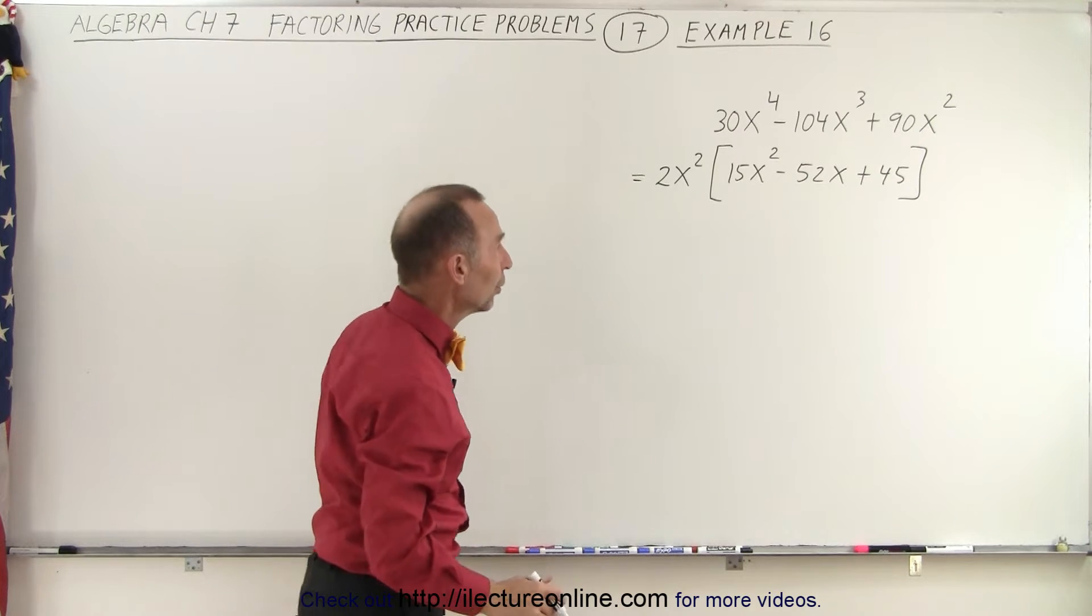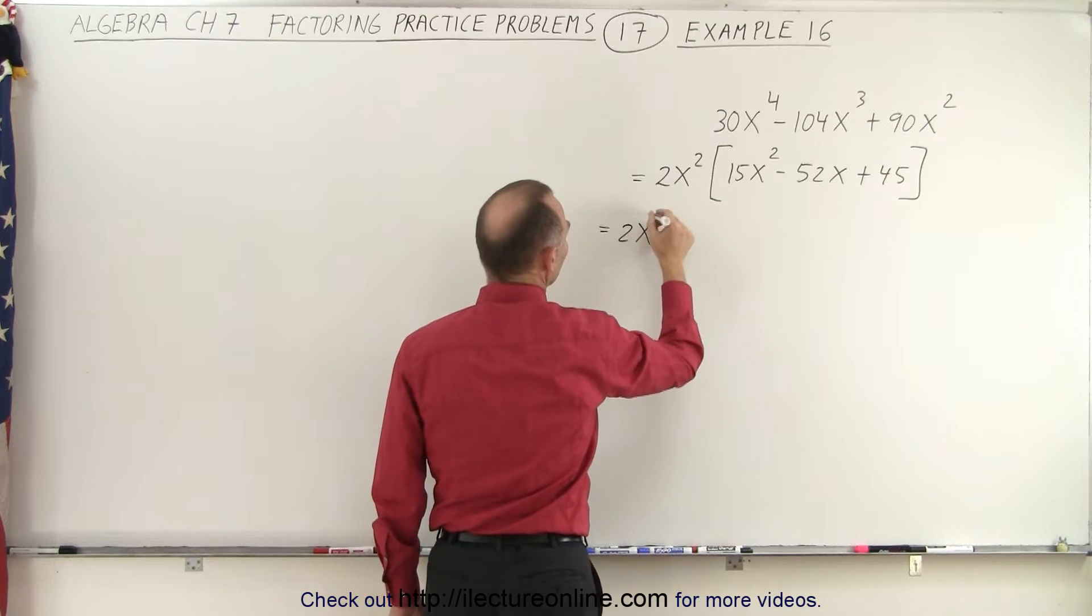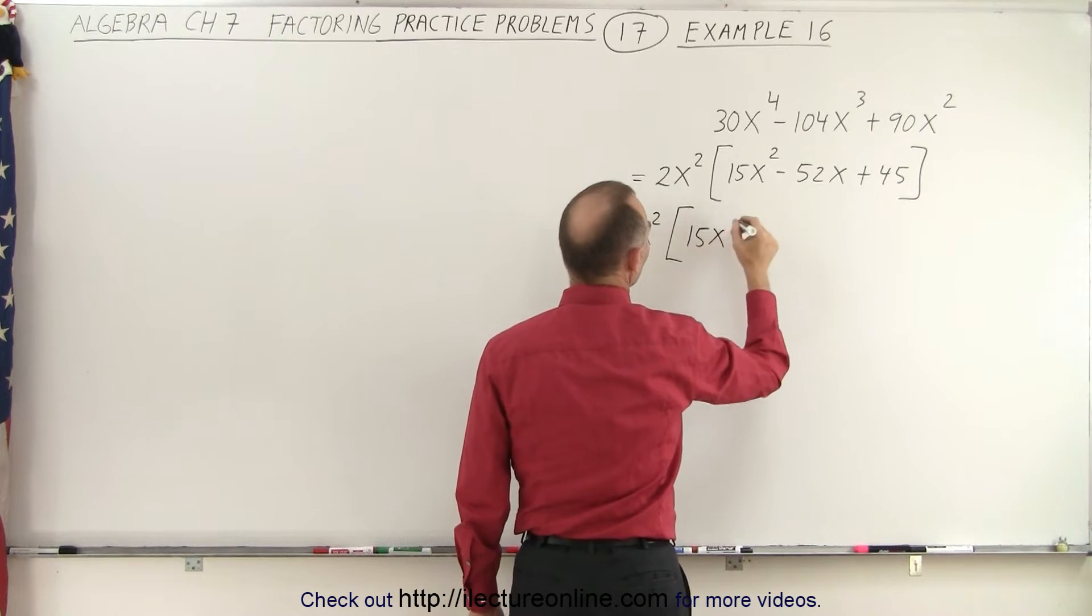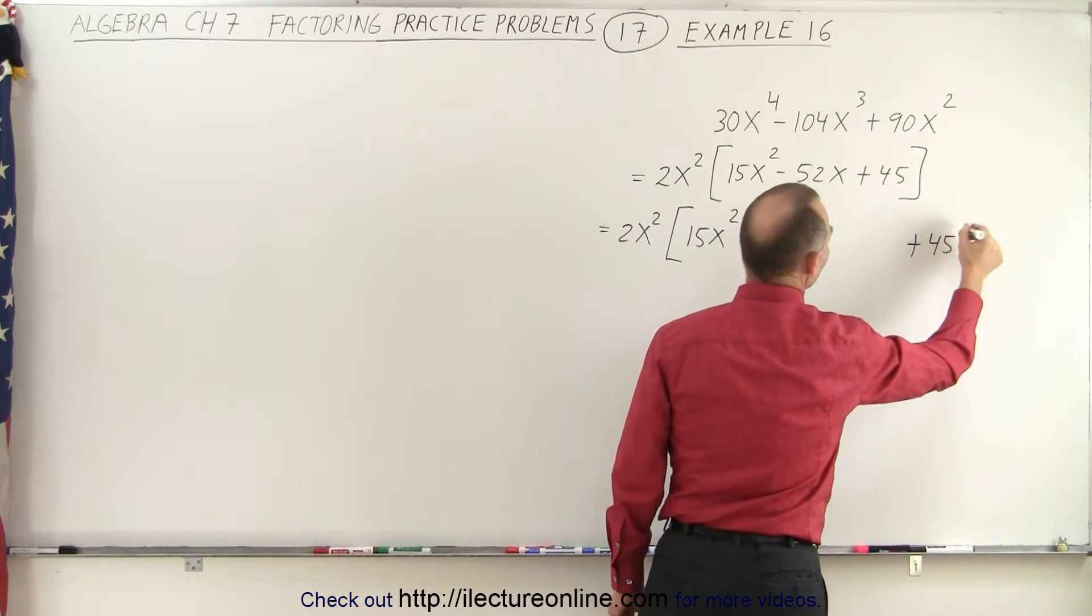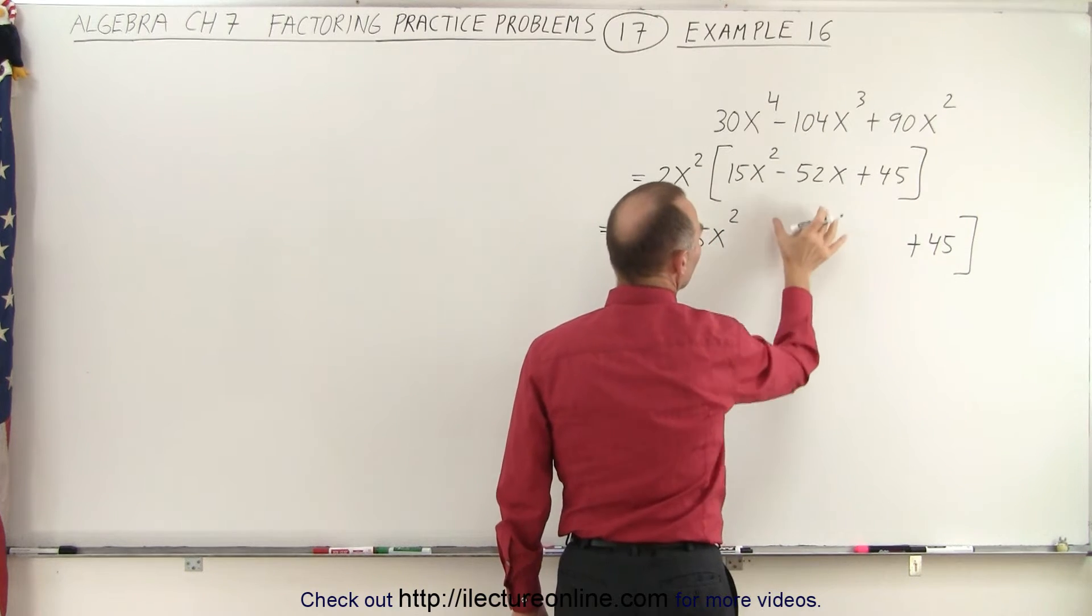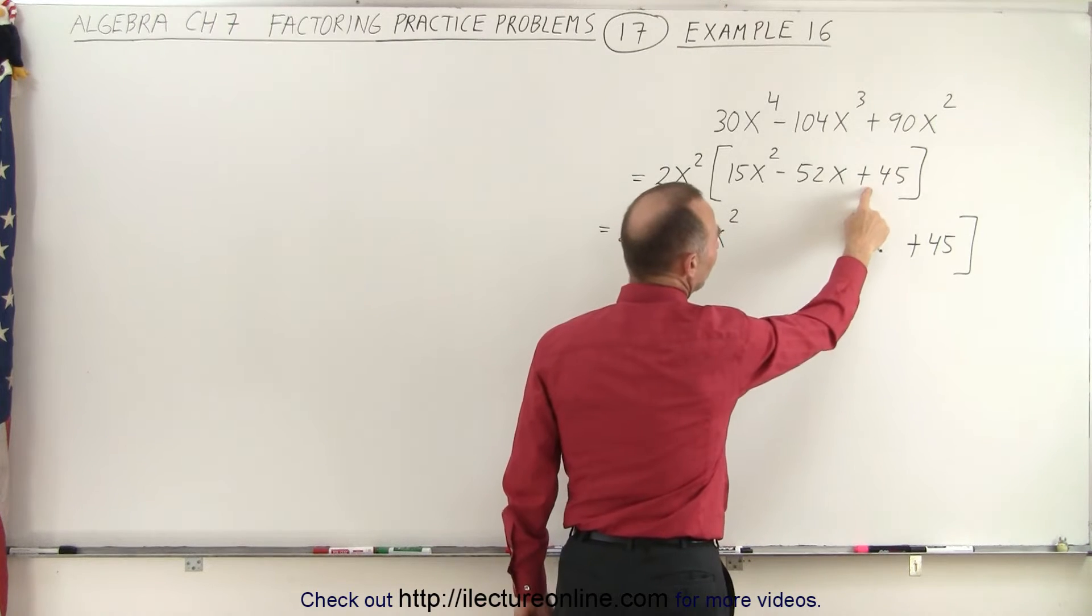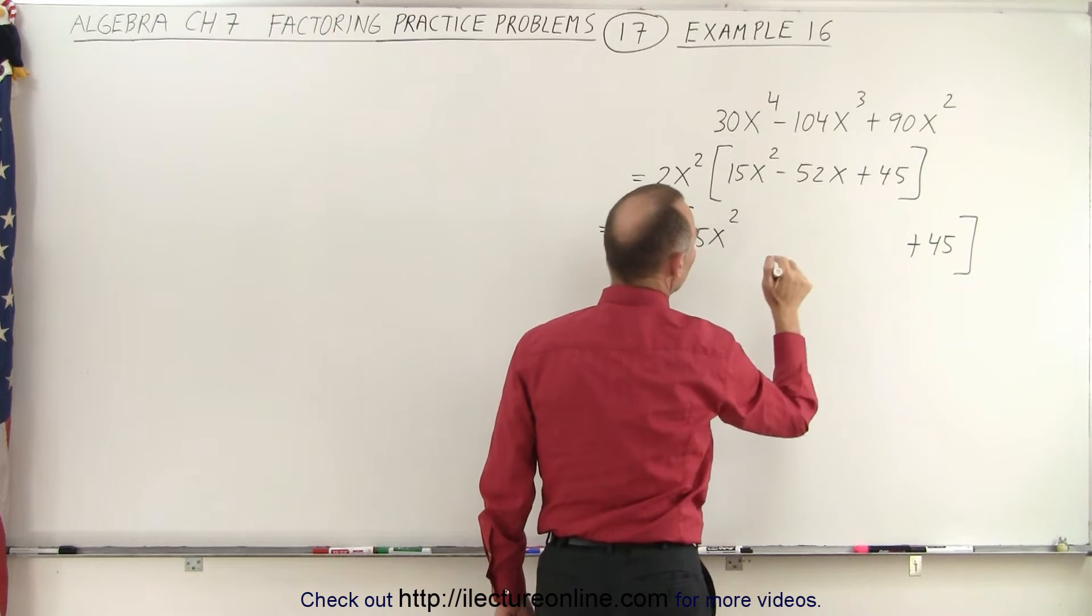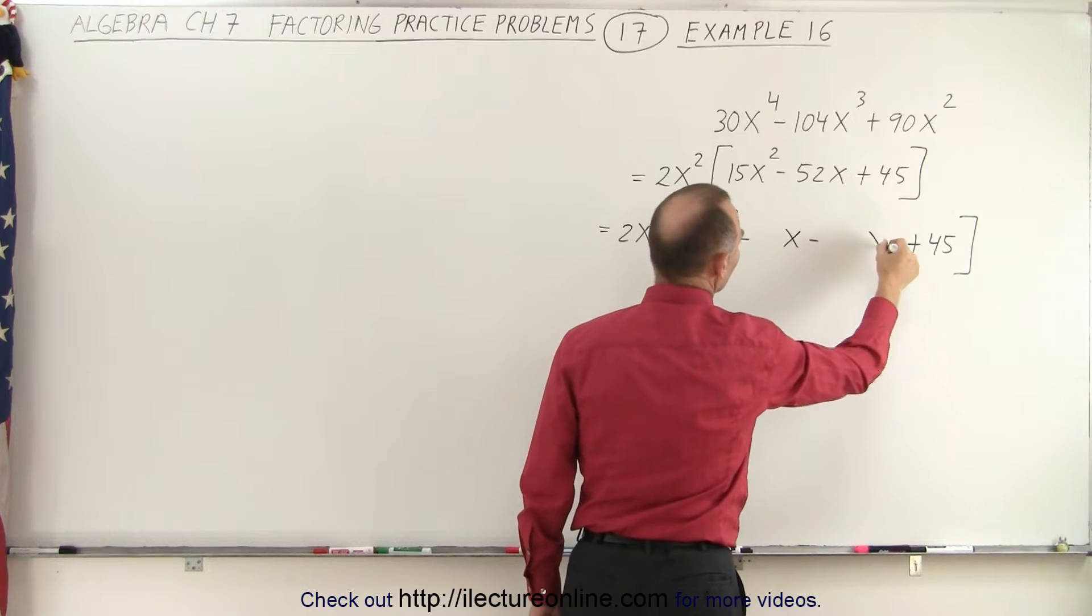Now notice if we use the methodology here where we're going to rewrite it as 2x squared times, we separate the first and the last term, 15x squared plus 45. And then we're going to look for two numbers in here that will add up to the middle term. Now notice, since the last number is positive and the middle term is negative, that means that both of these must be negative numbers. So minus something x minus something x.